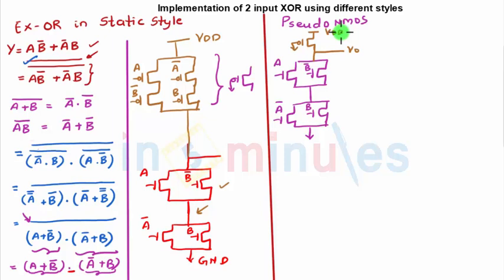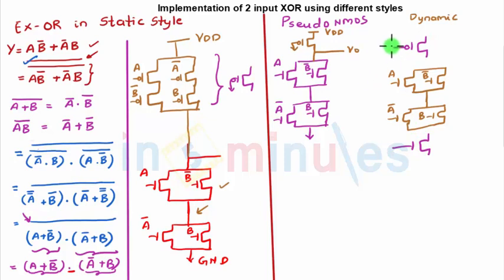Now let's implement the same using dynamic technique as well. So again, let's draw the pulldown: A parallel to B bar in series with A bar, which in turn is parallel to B. So this is nothing but my pulldown. And in dynamic we have a header and a footer transistor. Header is a PMOS and footer is an NMOS.